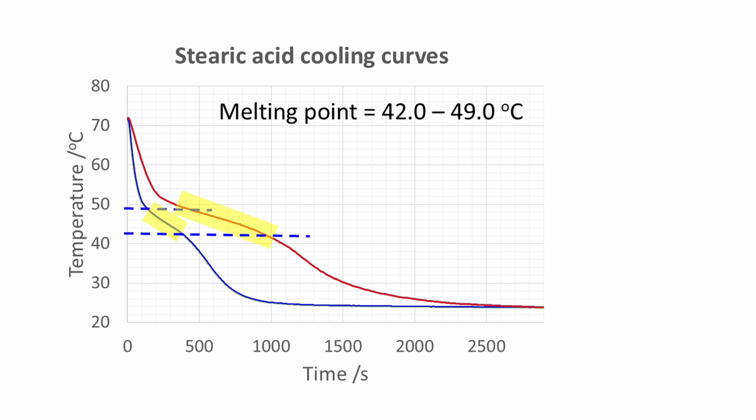We would expect that the same substance, stearic acid in this case, would have the same melting point regardless of how it is cooled. The data from the experiment supports this. Both cooling curves show the same melting point range, between 42.0 and 49.0 degrees Celsius.